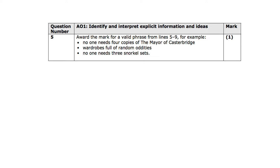Okay, so you get a mark for 'no one needs four copies of the Mayor of Casterbridge,' 'wardrobes full of random oddities,' and 'no one needs three snorkel sets.' Quite often I find that people put down the quote 'yards and yards of dusty books,' but unfortunately you don't get a mark for that. You should have been able to do question four and five very quickly.